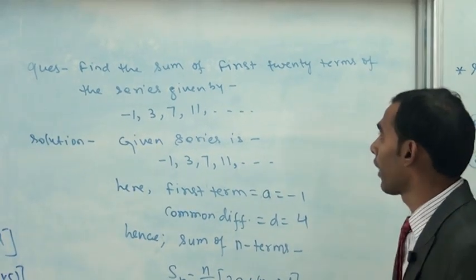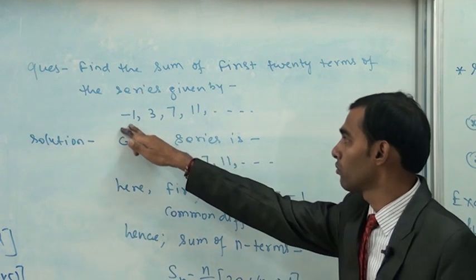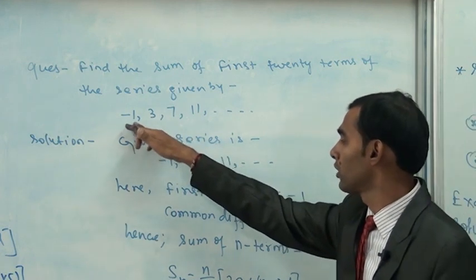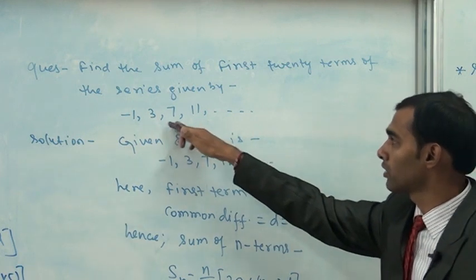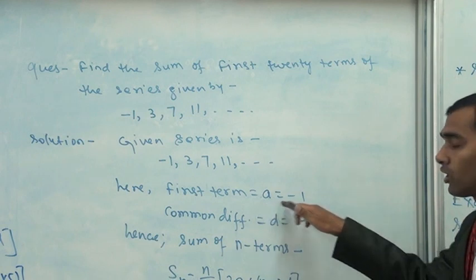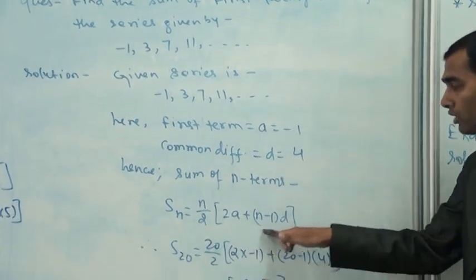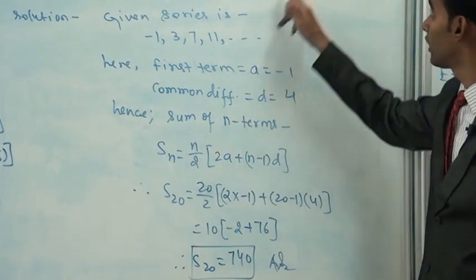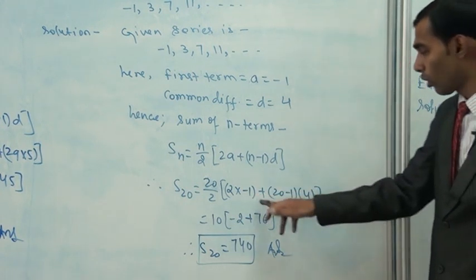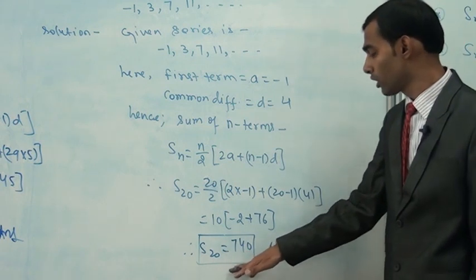Next question: Find the sum of the first 20 terms of the series -1, 3, 7, 11. The first term a = -1 and the common difference: 3-(-1) = 4, 7-3 = 4, 11-7 = 4. So d = 4. This is an arithmetic progression. Using Sn = (n/2)[2a + (n-1)d]: S20 = (20/2)[2×(-1) + (20-1)×4] = 10[-2 + 76] = 10 × 74 = 740. So the sum of 20 terms is 740.